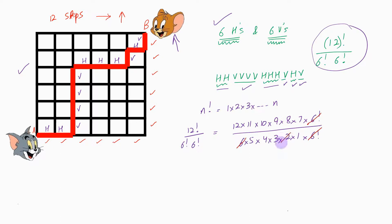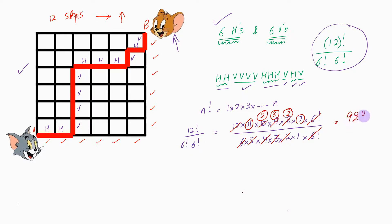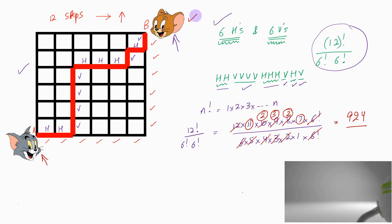6 × 2 = 12, so those cancel. 4 cancels, leaving 2. 3 cancels, leaving 3. 5 cancels, leaving 2. Now 2 × 3 × 2 = 12, and 12 × 7 = 84, and 84 × 11 = 924. So the answer is 924 — there are 924 ways in which Tom can reach his friend Jerry.